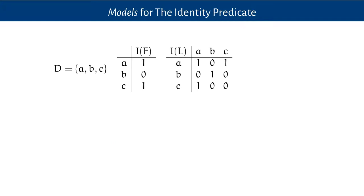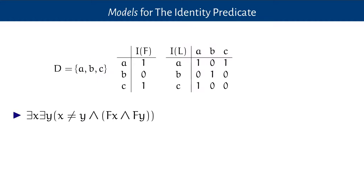Let's look at how the identity predicate works in models. Here's a model we've seen before with three objects a, b, and c in the domain, a one-place predicate F, and a two-place predicate L. We don't need any new data to interpret the identity predicate — we already know what the things are. So we can see that 'there exists x, there exists y, such that x ≠ y and both are F' is true because, for example, a is not identical to c and both Fa and Fc are true.